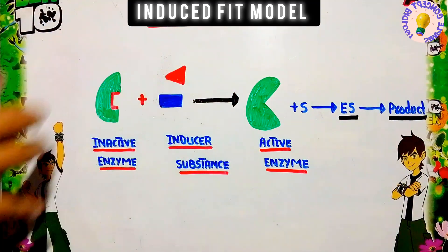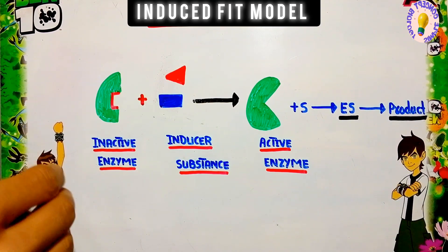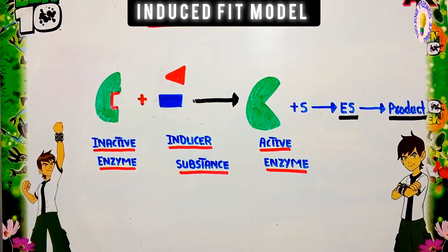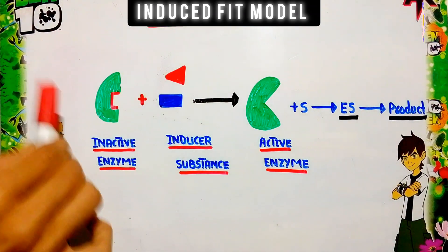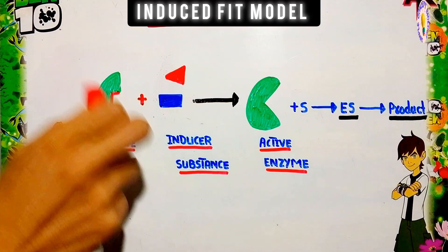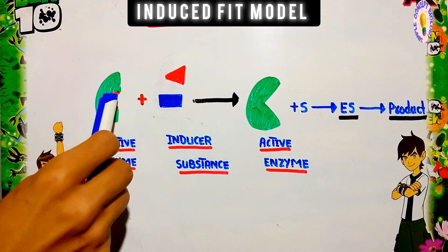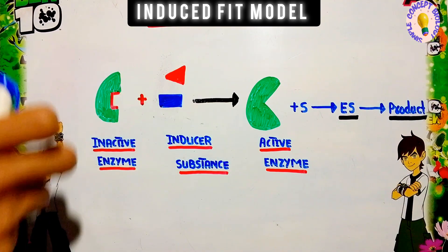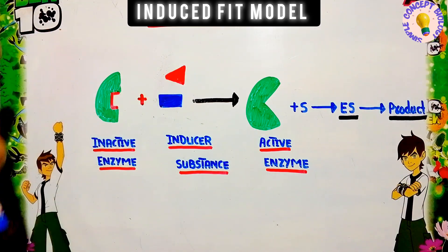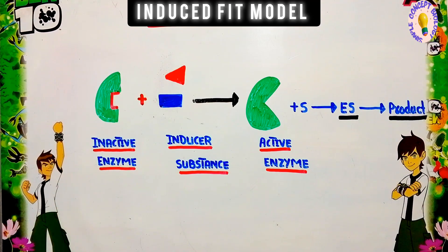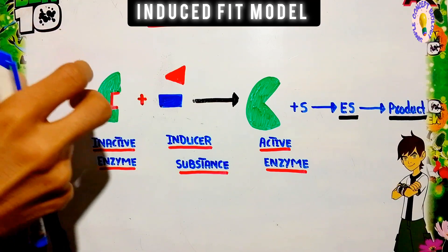The induced fit model explains that an enzyme reacts with its substrate only when some modification occurs in the enzyme. We have an enzyme whose activity is related to a specific site called the active site. This enzyme is initially inactive, and some modification must occur in this active site. After this modification, the enzyme will become active.